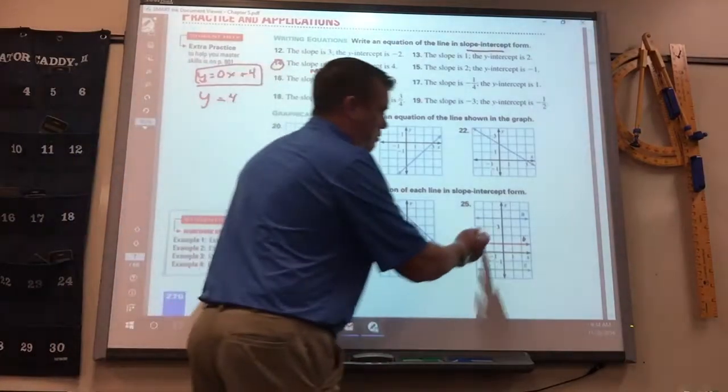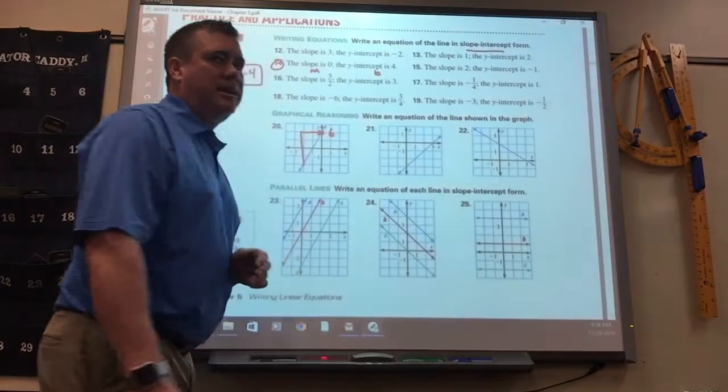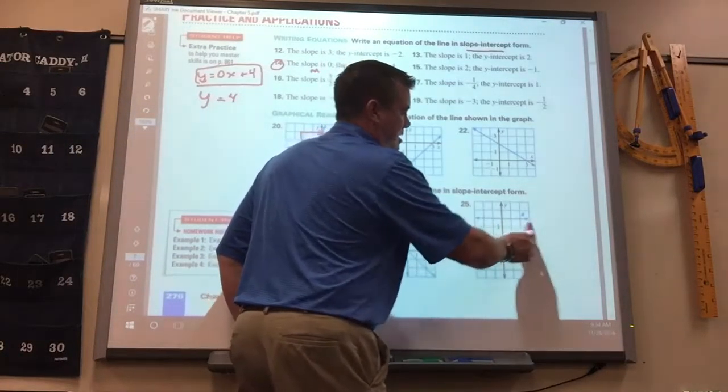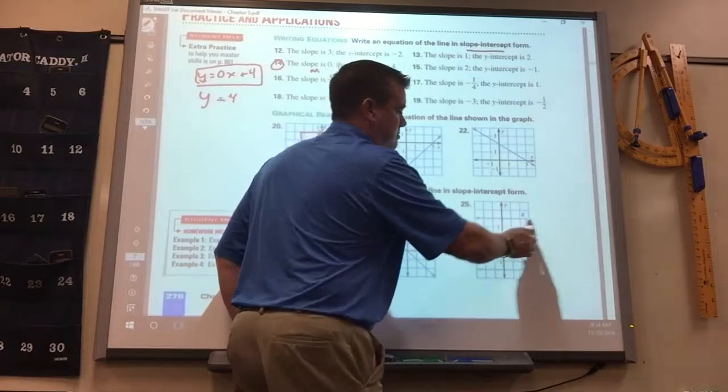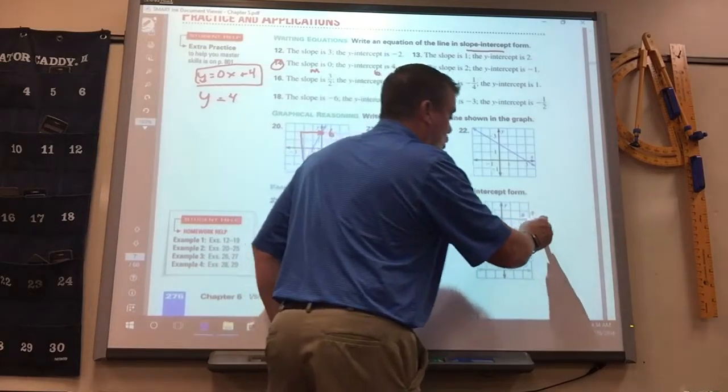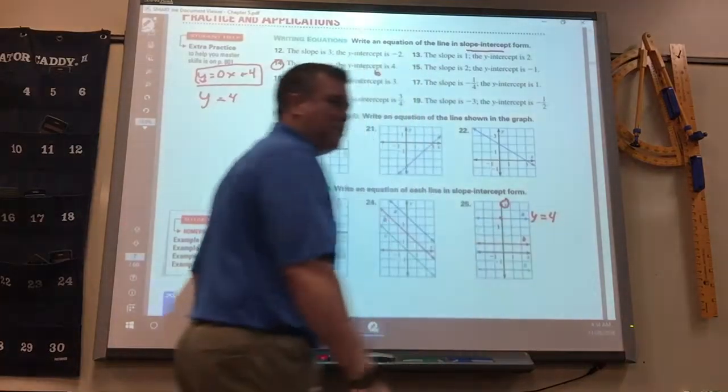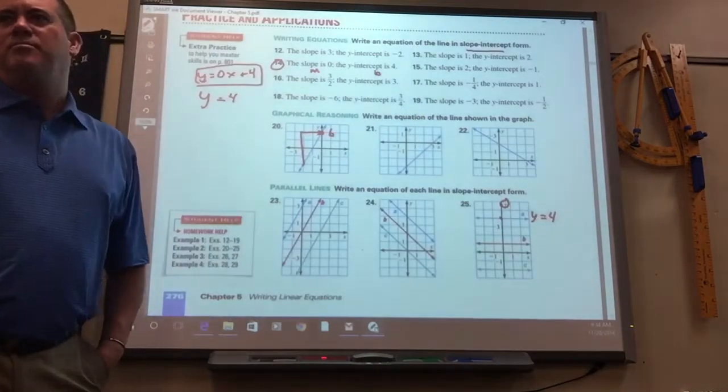Now, if you remember, when you look over at 25 here, they're all horizontal lines. So you only have to find one. So what's the equation of this? A. Zero. No? Equals 4. Y equals 4 because it crosses the Y-axis at 4.